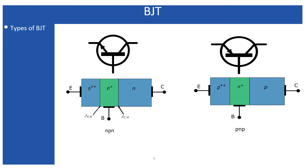Before going into details, let us see what are the types of Bipolar Junction Transistors. Mainly two types of BJT are considered: the first one is the NPN and the second one is the PNP. NPN stands for N-type semiconductor, P-type semiconductor, and N-type semiconductor again, because an NPN transistor is made of three layers of semiconductor: N-type, P-type, and N-type.